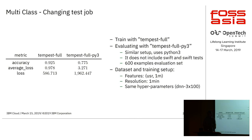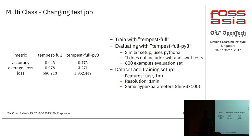We also tried the multi-class classification across different CI jobs using the same setup. This time it didn't work as well — the best accuracy we could get training on one CI job and evaluating on a different one was around 0.77, and the average loss increased significantly.